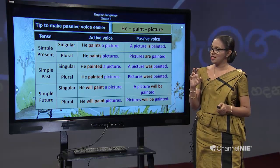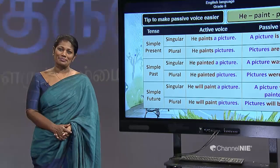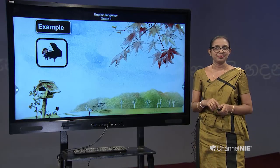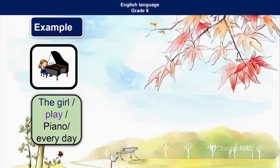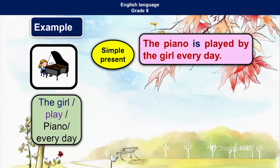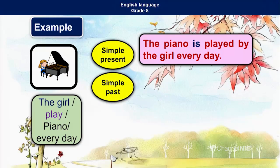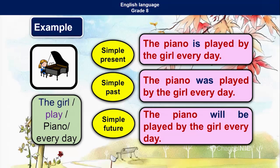So in passive voice, even though children say it's difficult, it's not difficult — it's really easy. They only have to remember the sentence structure and the be verb according to the tense and the number, that is whether the sentence is singular or plural. According to that the be verb changes; the rest of the sentence remains the same. For example, using a girl with a piano: in simple present — the piano is played by the girl every day. In simple past — the piano was played by the girl every day. In simple future — the piano will be played by the girl every day.